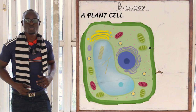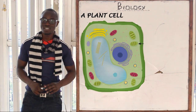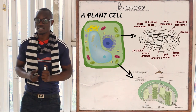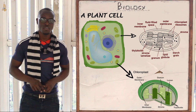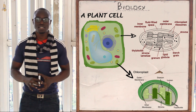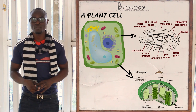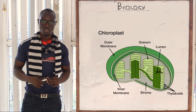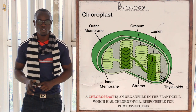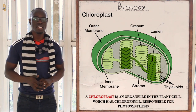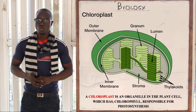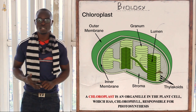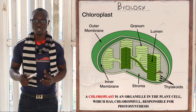Welcome again to this class where today we are going to discuss about the chloroplast. You remember in the previous classes we discussed about the leaf; now in this class we are going to discuss about chloroplast as we build slowly towards photosynthesis. So what is a chloroplast? It is the organelle in the leaf which facilitates and carries out photosynthesis.